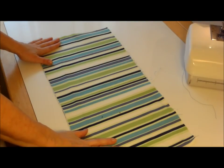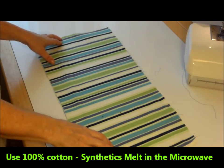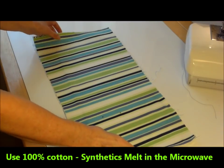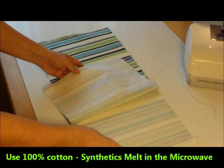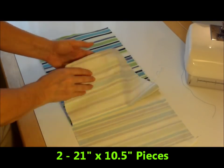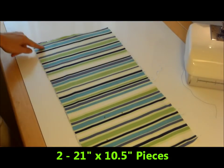You want to make sure that you use 100% cotton. Synthetic fibers do have a tendency to melt in the microwave, so we want to be safe. You want to cut out two pieces, one for the inside, one for the outside, 10 and a half by 21 inches.